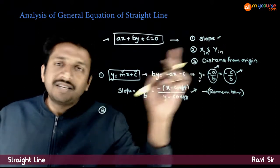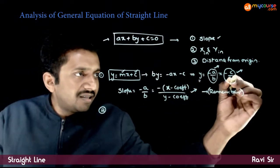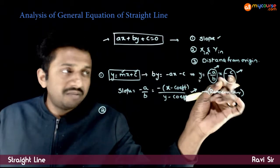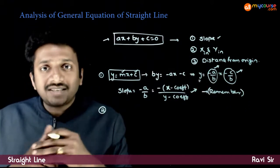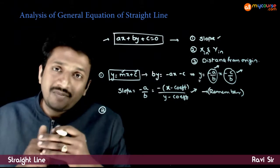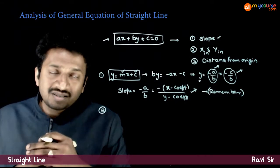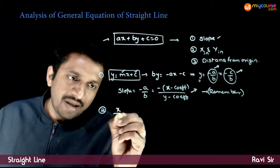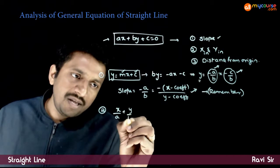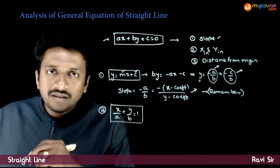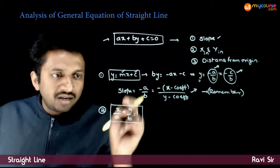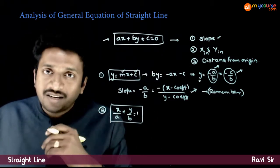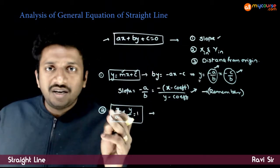Next, what are the x-intercept and y-intercept? The constant you get in the slope-intercept form is the y-intercept, which is minus c by b. But if you want both x-intercept and y-intercept, the best process is to convert this into intercept form. The intercept form is x by a plus y by b is equal to 1. So if you convert the equation into x by something plus y by something equals 1, you get the intercepts.